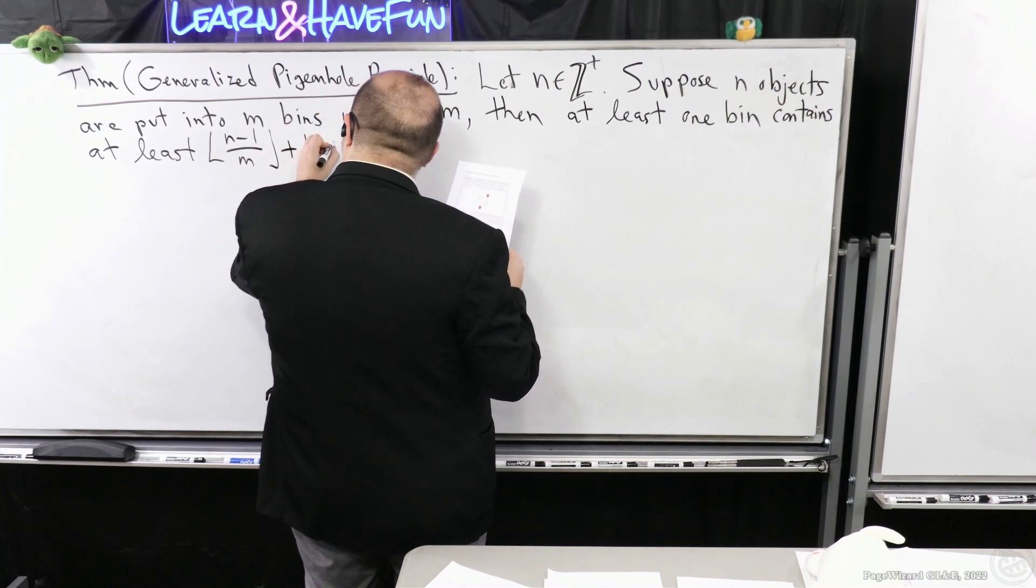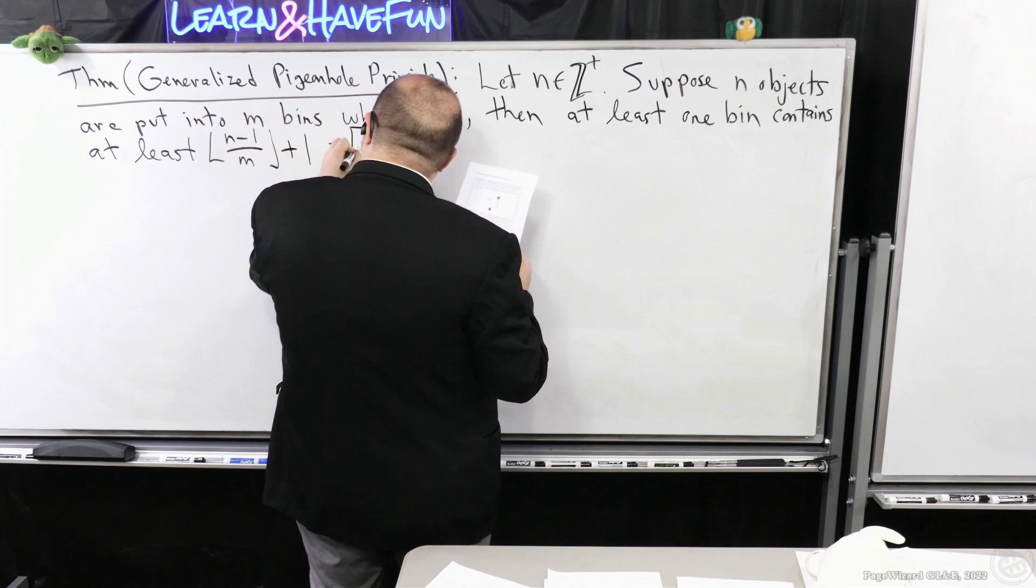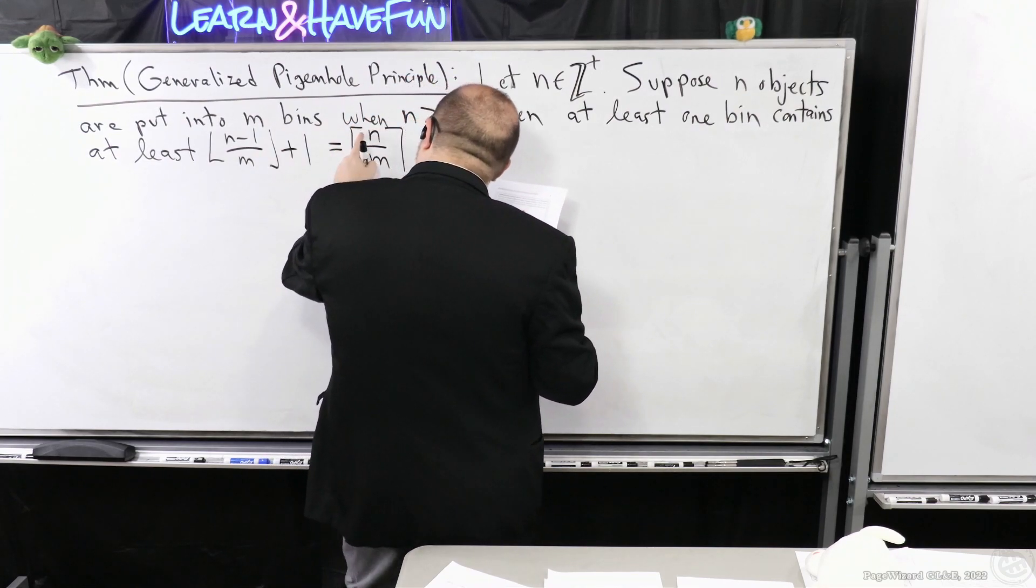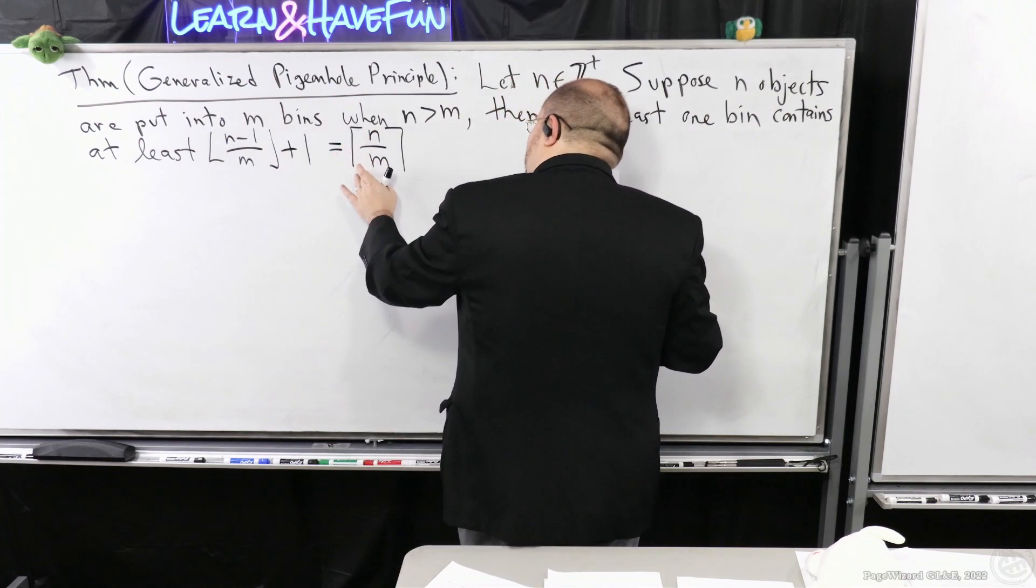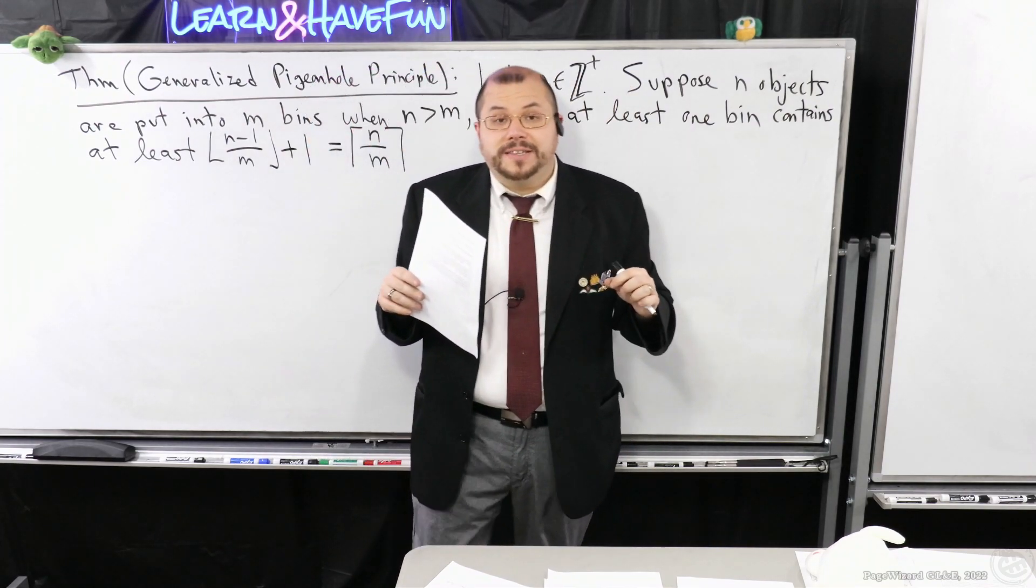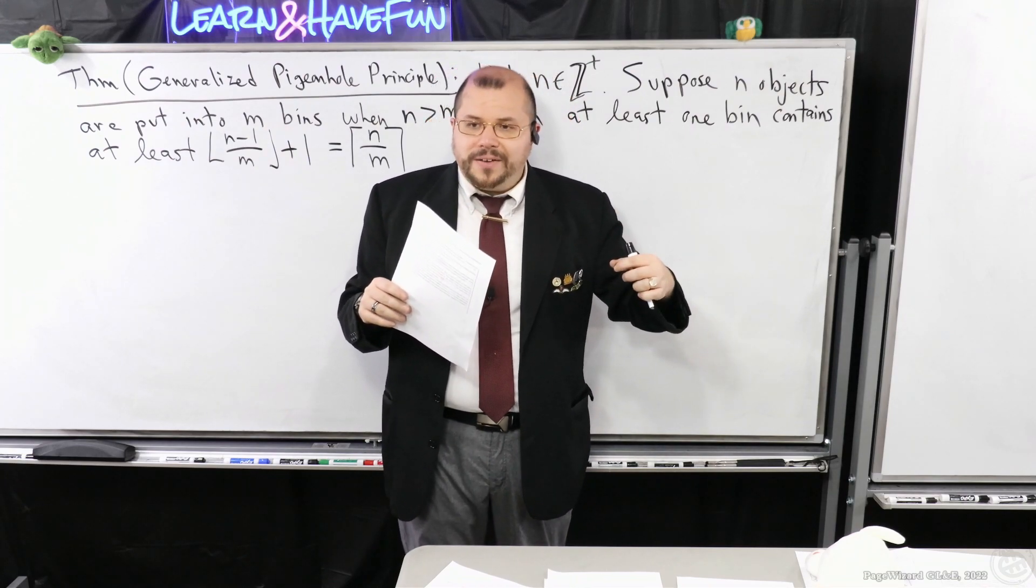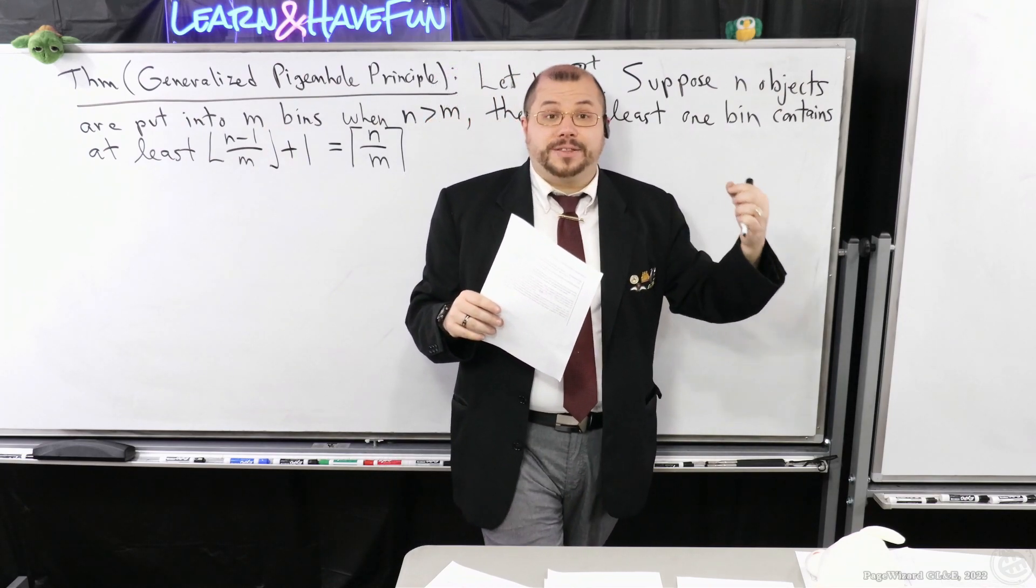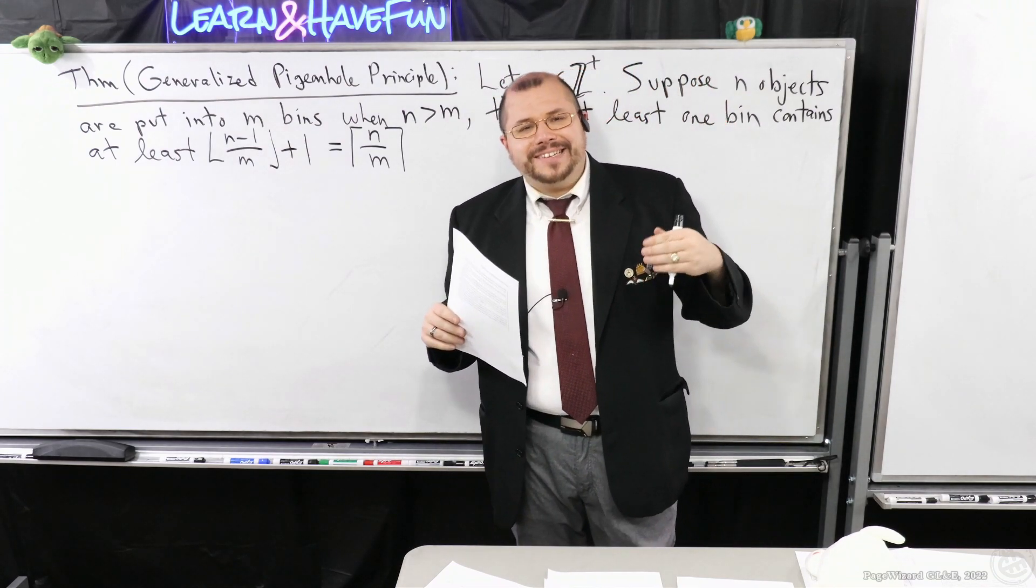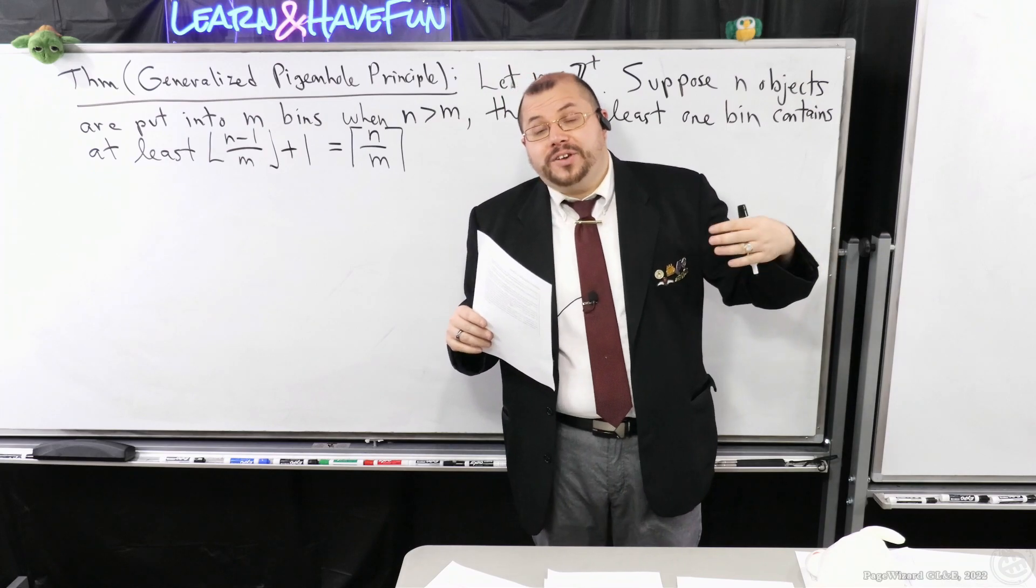And in particular this is actually equivalent to me writing what we call the ceiling of n over m. So the ceiling is where you always round up the fractional part to the next integer. So for example if I have 2.5, the ceiling of 2.5 is 3.